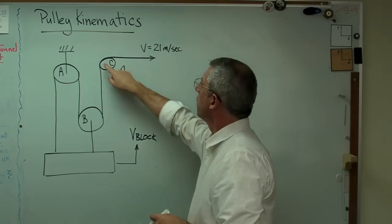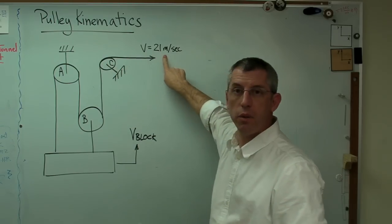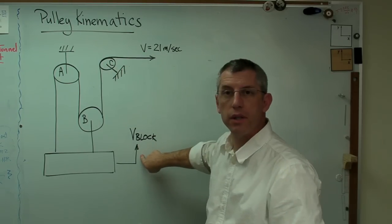The rope is being pulled through pulley C at a velocity of 21 meters a second. What's the velocity of the block?